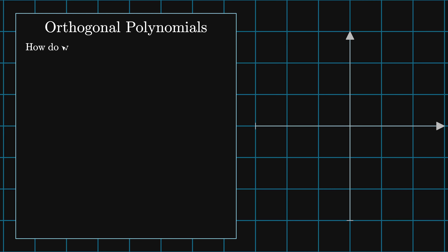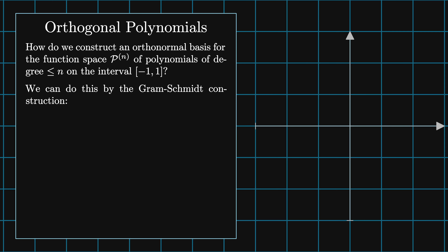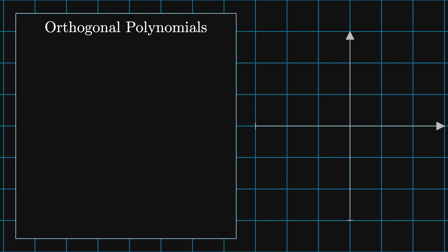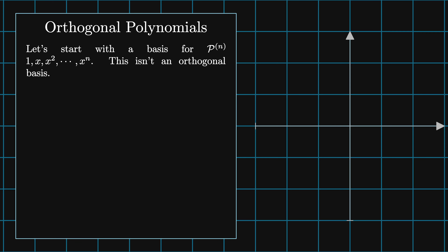How do we construct an orthogonal basis for the function space pn of x of polynomials of degree less than or equal to n on the interval minus one to one? We can do this by the Gram-Schmidt construction. Starting with a spanning set of elements w, the zeroth element of the orthogonal set v is v0 equals w0. Then the i-th element of v is given by vi equals wi minus the sum from j equals zero to i minus one of the inner product of wi with vj divided by the norm of vj squared times vj. The first construction we'll do is based on the L2 inner product, but in principle you could choose any weight function you'd like, as these are useful for different purposes. Let's start with a basis for pn given by the set 1, x, x squared, and so on through x to the n.